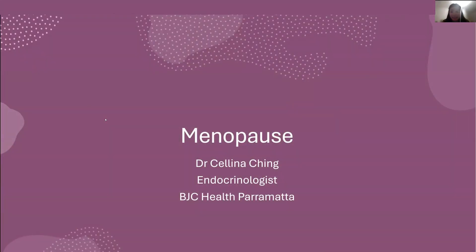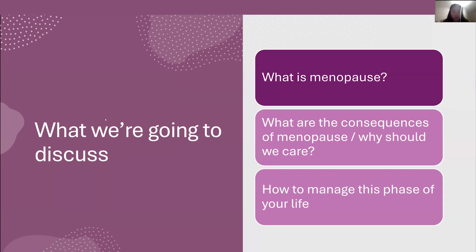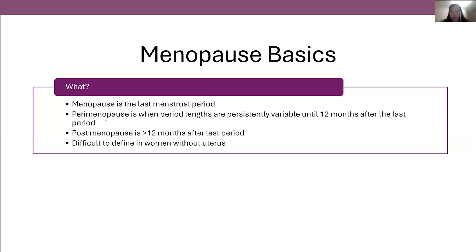Thanks everyone for joining us tonight. I'll be speaking about menopause. So just an overview about what we're going to discuss: firstly, what exactly is menopause and why does it occur? What are the consequences of menopause and why should we really care? And how to manage this phase of your life. We'll start with some definitions and characteristics of menopause, so we're on the same page using the same terminology.